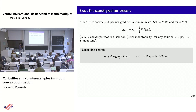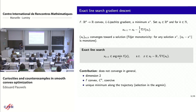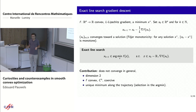That's a variant of the same algorithm: the exact line search variant. At each step you perform a gradient step, but instead of choosing a fixed step size you optimize on the ray starting from the current iterate in direction minus the gradient, minimizing the objective value on this ray. A legitimate question is: does it produce converging sequences? One of our contributions is to answer that — and it does not converge in general. We have a counter-example in dimension two which is convex and CK, and the absence of convergence is not due to bad specification of the argmin; along the trajectory the argmin is unique, so it is an intrinsic phenomenon.